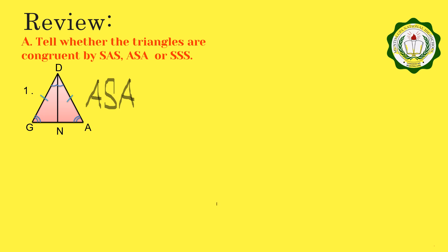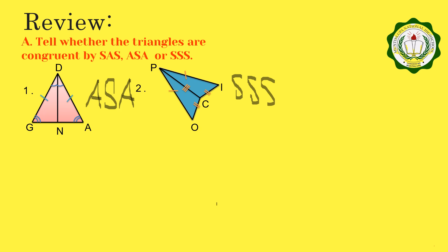For number 2, the congruent parts of these two triangles are: segment PI congruent to segment PO, segment CI congruent to segment CO, and segment PC congruent to segment PC. We have a side, another side, and another side. So we can say that these two triangles are congruent under SSS congruence postulate.